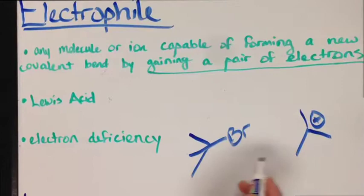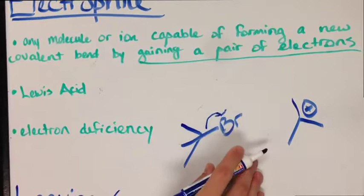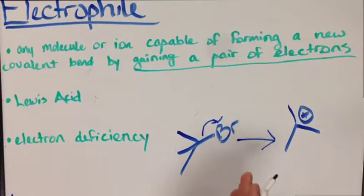In our example, the arrow will be drawn from the bond to what will become our leaving group to form a carbocation, which is our electrophile.